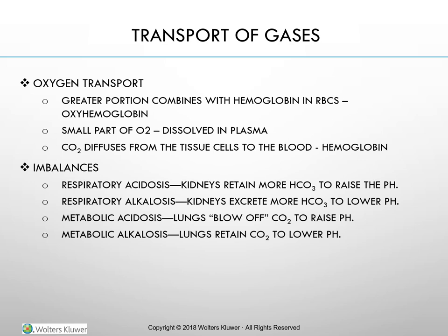Transport of gases: Oxygen transport occurs in two ways — a small amount is dissolved in water in the plasma, and a greater portion combines with hemoglobin in red blood cells to form oxyhemoglobin. Dissolved oxygen is the only form that can diffuse across cellular membranes; as it crosses, oxygen from hemoglobin rapidly replaces it. The formula is: O2 + Hgb → HgbO2.